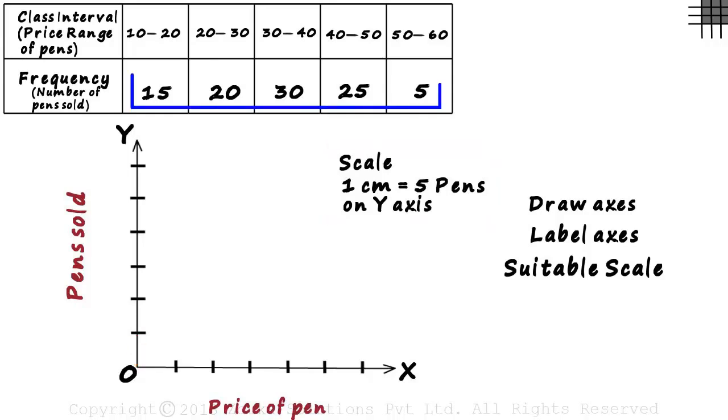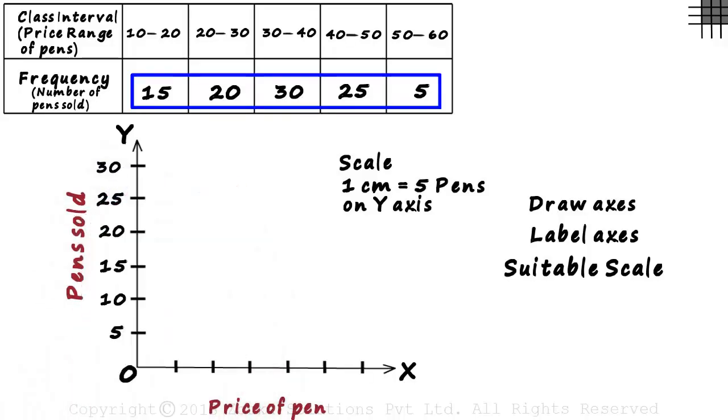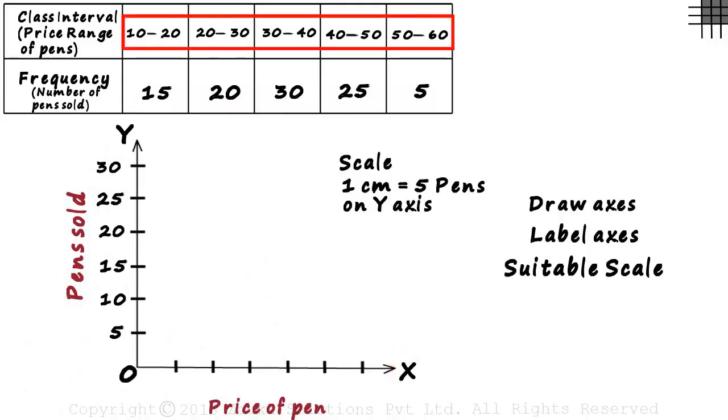We start writing the values on the y axis: 5, 10, 15 and so on up to 30. And on the x axis, we start writing the price range of pens. The first range is 10 to 20, then 20 to 30 and so on up to 50 to 60.